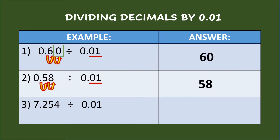Third example: seven and two hundred fifty-four thousandths divided by one-hundredth. The divisor has two decimal places. Move the decimal point of the dividend two places to the right and place the decimal point afterwards. The answer is seven hundred twenty-five and four-tenths.